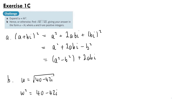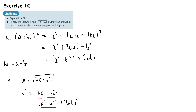If we say w is a plus bi, then squaring w gives a number of the form a squared minus b squared plus 2abi. We can equate coefficients: 40 equals a squared minus b squared, and for the coefficient of i, minus 42 equals 2ab. This gives us two simultaneous equations: a squared minus b squared equals 40, and 2ab equals minus 42, which simplifies to ab equals minus 21.